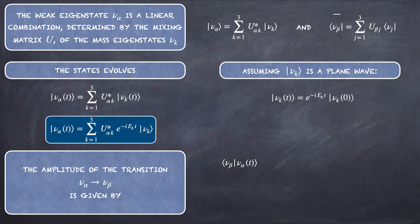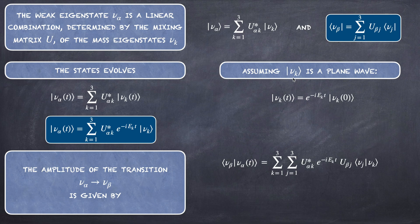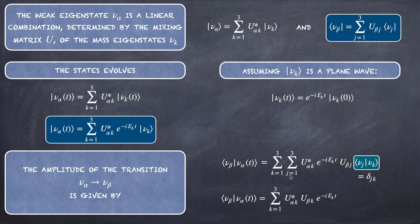We are interested in the amplitude of the transition ν_α → ν_β. This amplitude is given by the inner product ⟨ν_β | ν_α(T)⟩, which gives a double summation over K and J of U*_αK times the exponential, U_βJ, and the product ⟨ν_J | ν_K⟩.